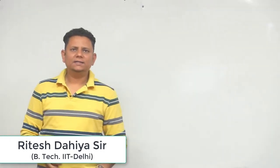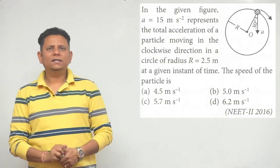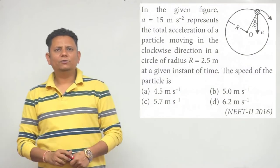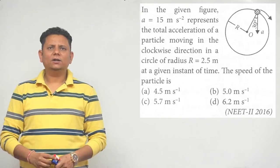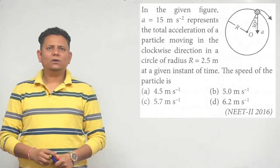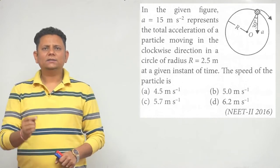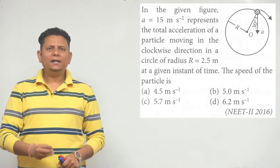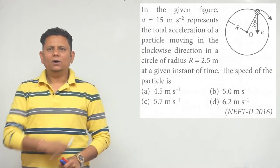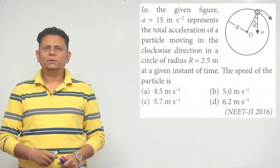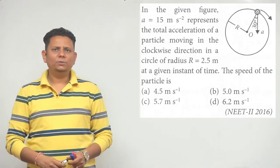Next question. In the given figure, A equals 15 meter per second square represents the total acceleration of a particle moving in a clockwise direction in a circle of radius 2.5 meter at a given instance of time. We need to find the speed of the particle, and our options are 4.5 meter per second, 5, 5.7, or 6.2 meter per second.